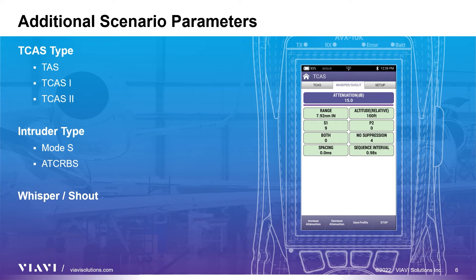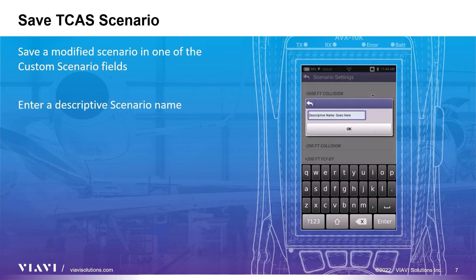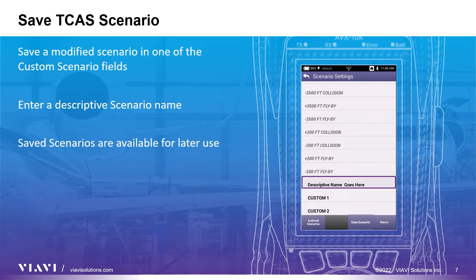Whisper Shout provides an additional attenuation setting that allows for shifting the power levels so that sufficient responses are elicited from all the targets of interest. The value can be changed with the soft keys or by clicking on the attenuation value. If you have modified a CAN scenario and wish to save it, click on the Scenario field, scroll down to one of the custom fields and click on one to enter the name for your new scenario. Once that is entered, click the Save Scenario soft key. The saved scenario will be retained and you can load it anytime in the future.